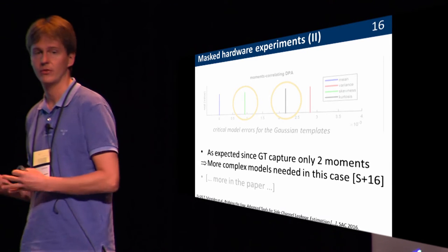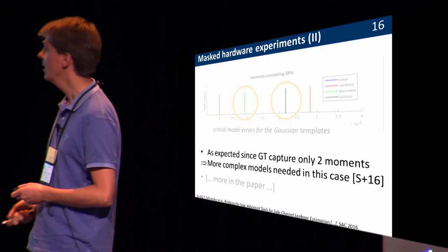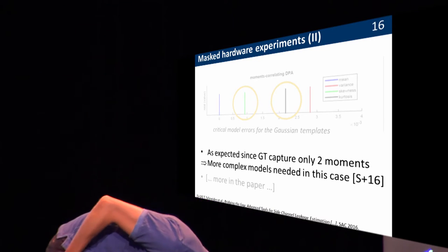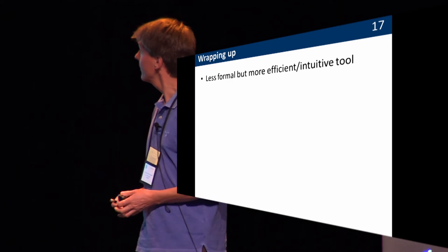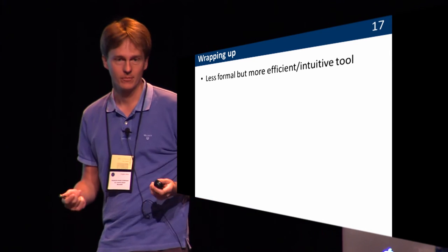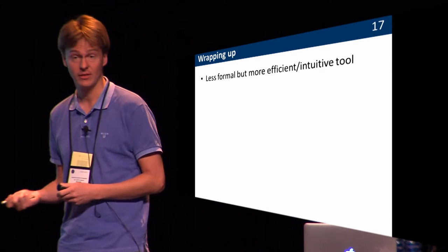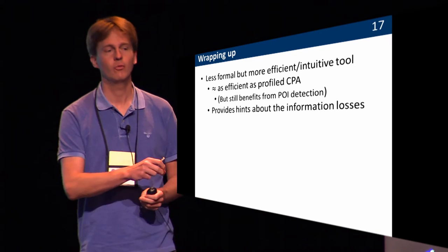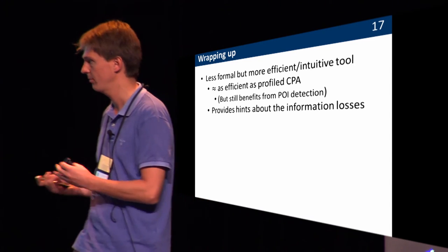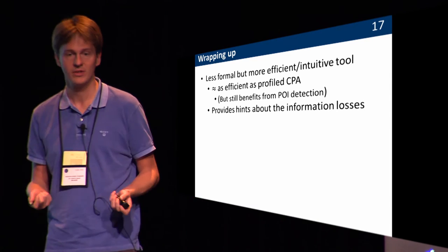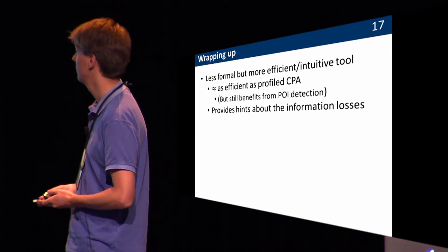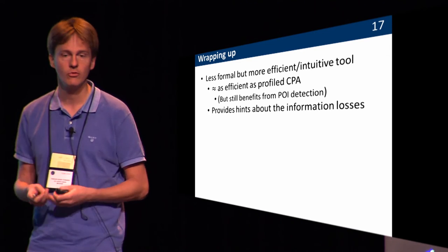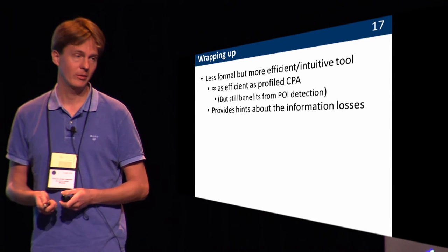Conclusion and wrapping up. The main conclusion is simple: it's a less formal, but probably more efficient and more intuitive tool. It's more efficient because what you need to do is essentially profile CPA many times — still costly, so I don't claim you'd do that for all points of your implementation. I would combine this with POI detection. But if you have a couple of points of interest and want to test the model there, it's perfectly feasible with current means. The nice thing is it provides hints about the information loss — the moments-correlating DPA tells us, do we lose a lot or a little — which we did not have when using full distributions.